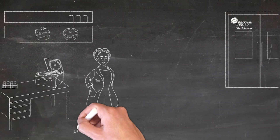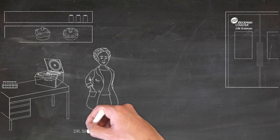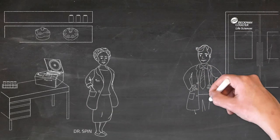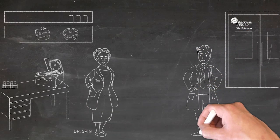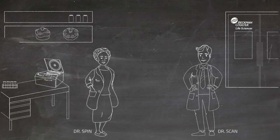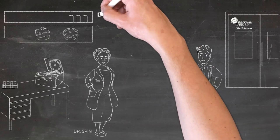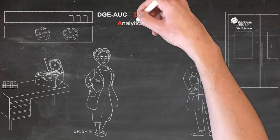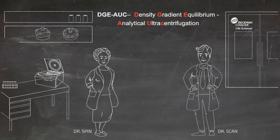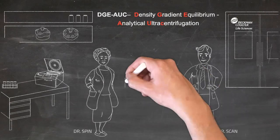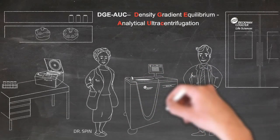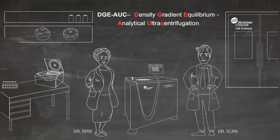Hi, my name is Dr. Spin, and I will try together with Dr. Scan to introduce a new technique to characterize and quantitate gene therapy products like viral vectors. This new technique is called density gradient equilibrium analytical ultracentrifugation, or DGEAUC.